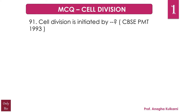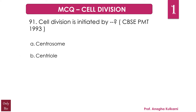Question number 91: Cell division is initiated by — A. Centrosome, B. Centriole, C. Centromere, and D. Chromomere. The correct answer for this question is A. Centrosome.